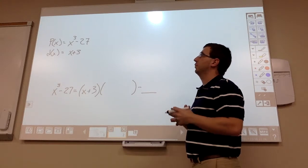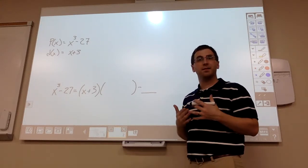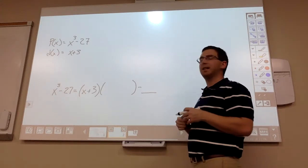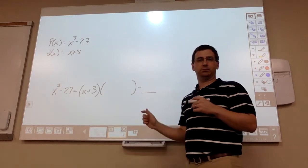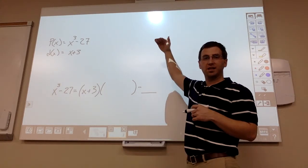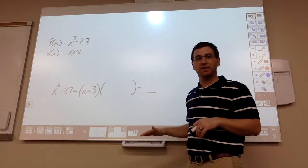So for p(x) to d(x), well p(x) is our polynomial, that's the stuff that goes inside the house. d(x) is the stuff that goes on the outside. The quotient is the stuff that goes on the top, and the remainder is what you get at the very bottom.